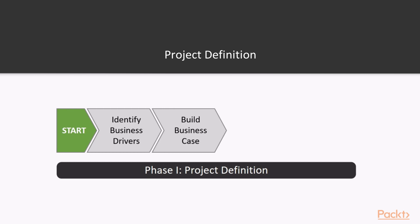Once we have defined the drivers behind an initiative and understood the high level objectives, the next stage is to start building the business case. We need to understand the business strategy and identify the key stakeholders for the project. We can then define the high level requirements and start to define user segmentation — looking at what different user types you have, how they work today and what they will need moving forward. At the end of the day it will be the users that decide whether or not the project is a success.